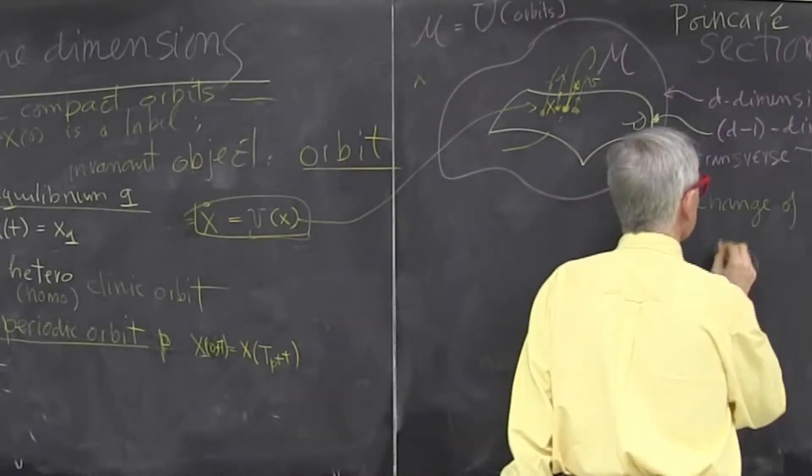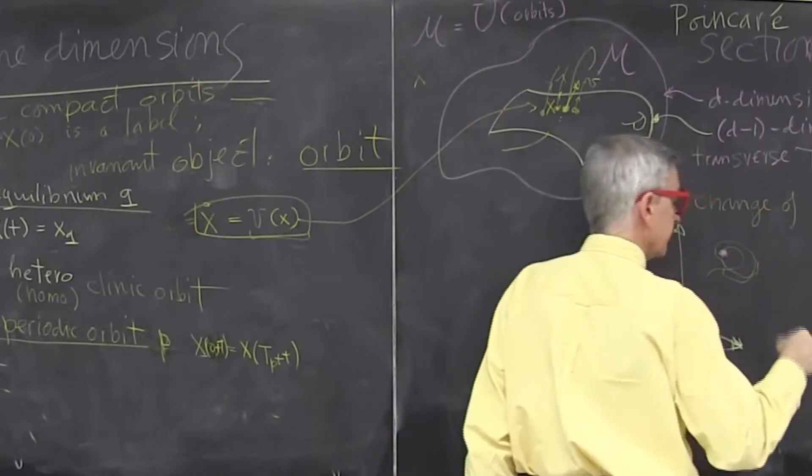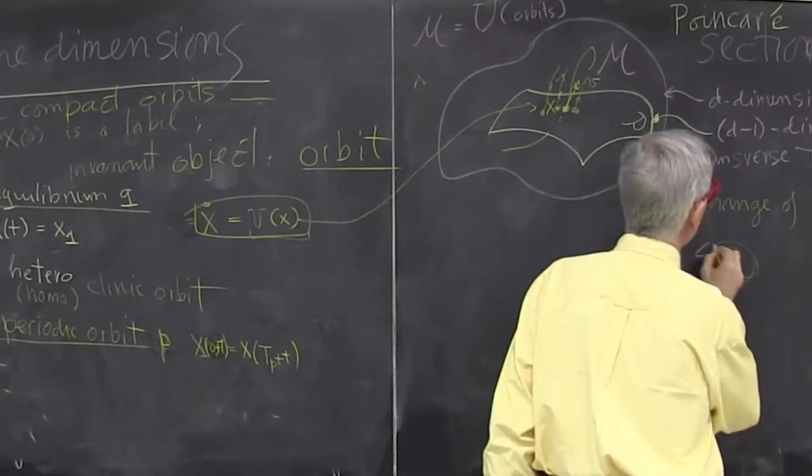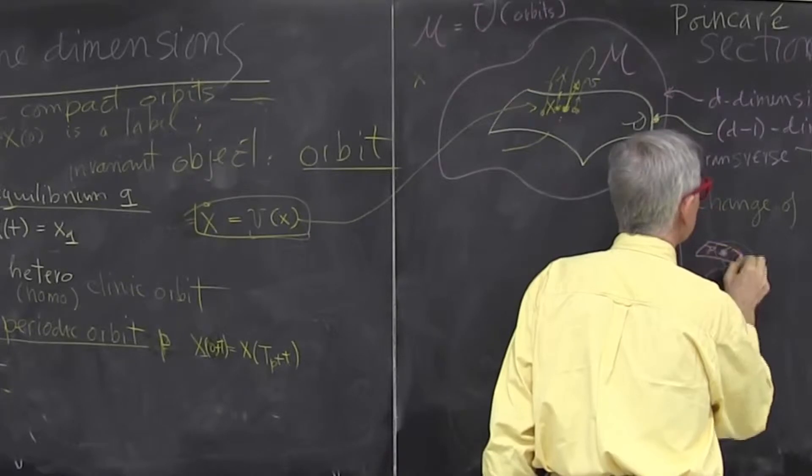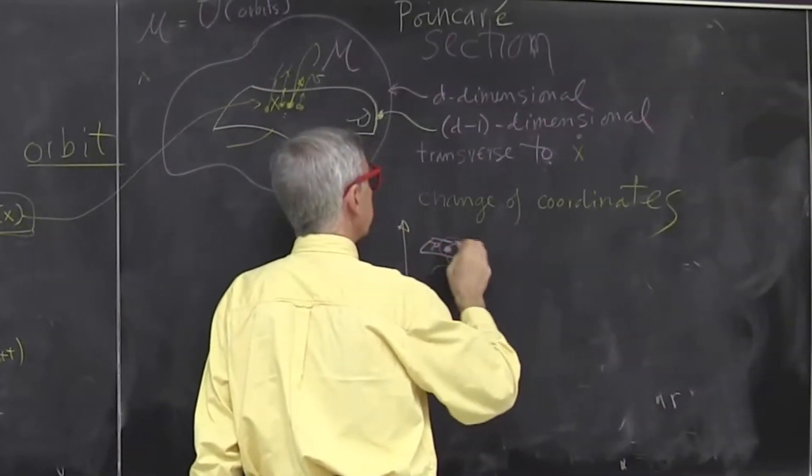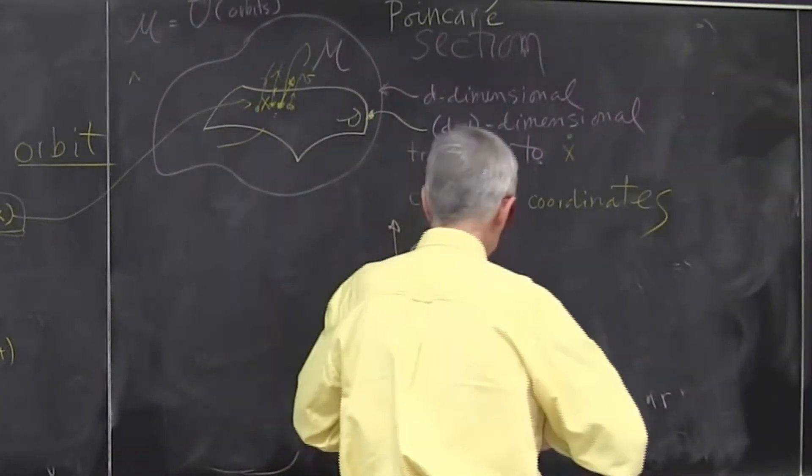For example, some vortex of a fluid or something. And then Poincaré's section will be implanted. And now what I'm doing really is I'm changing my coordinates.